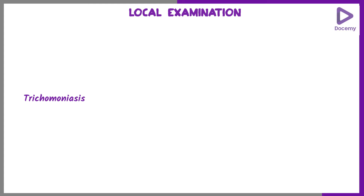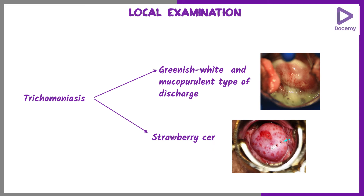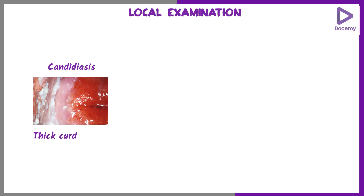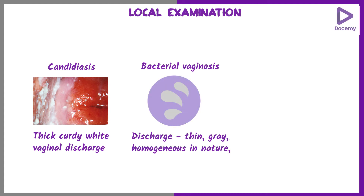Upon local examination, patients with Trichomoniasis will show a greenish white mucopurulent discharge, and the cervix shows the presence of reddish spots, which we call strawberry spots. In Candidiasis patients, you will visualize a thick curdy white vaginal discharge, which is very characteristic. Patients with Bacterial Vaginosis have a thin, grey, homogenous discharge with a fishy odour.